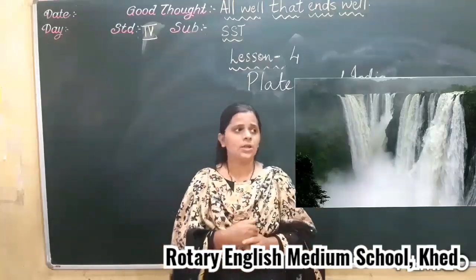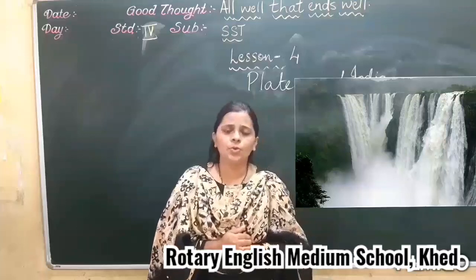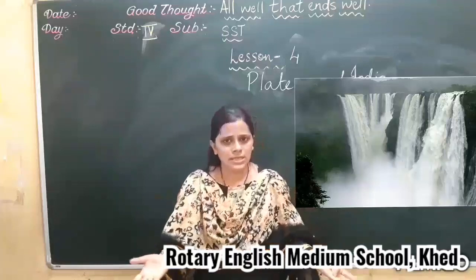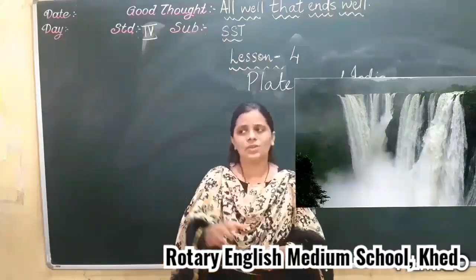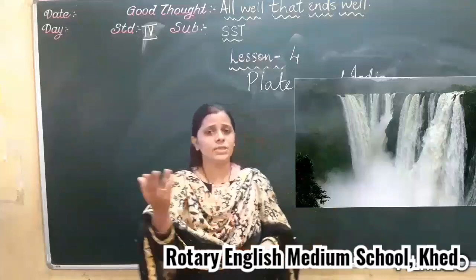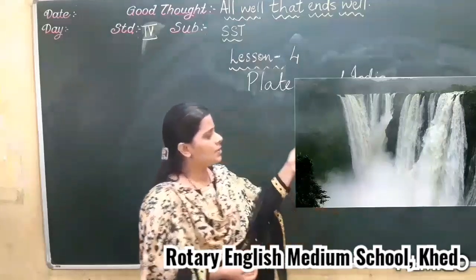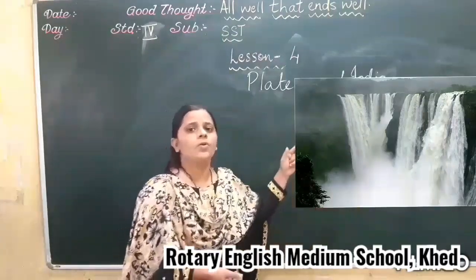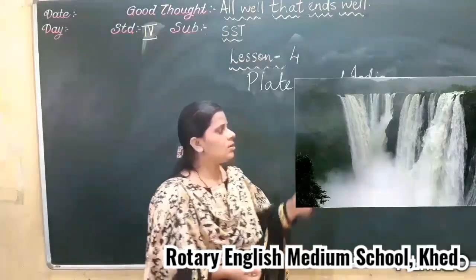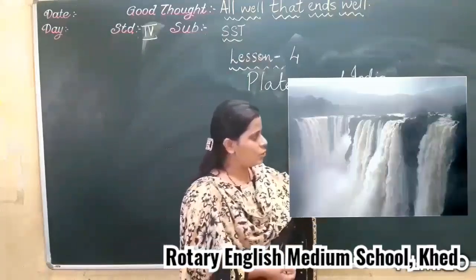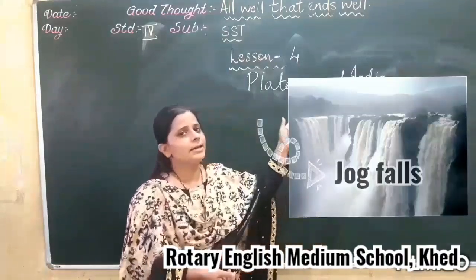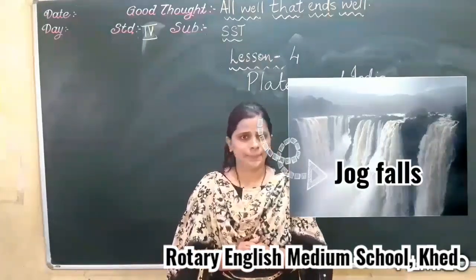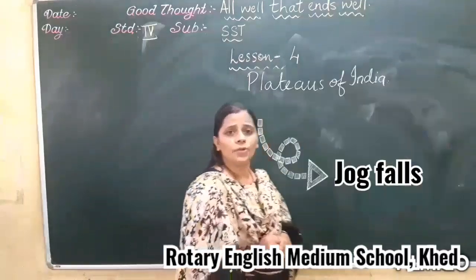Mostly in the rainy season, if you get the chance to go out, you can see waterfalls. Same here — when these rivers flow with great speed, they form waterfalls. The highest waterfall here is Jog Falls, which is in Karnataka. It is one of the highest waterfalls in India. You can see the picture of the waterfall.